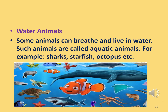Last is water animals. Some animals can breathe and live in water. They are called aquatic animals. For example, octopus and fish. And do you know there are some animals which live both on land and water? They are known as amphibians. For example, frog, tortoise and crocodile.